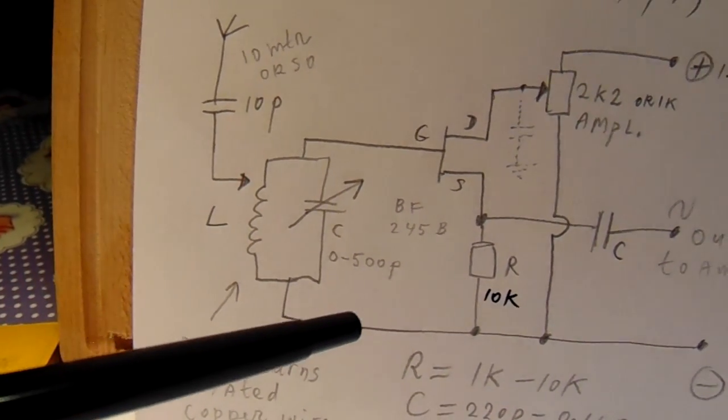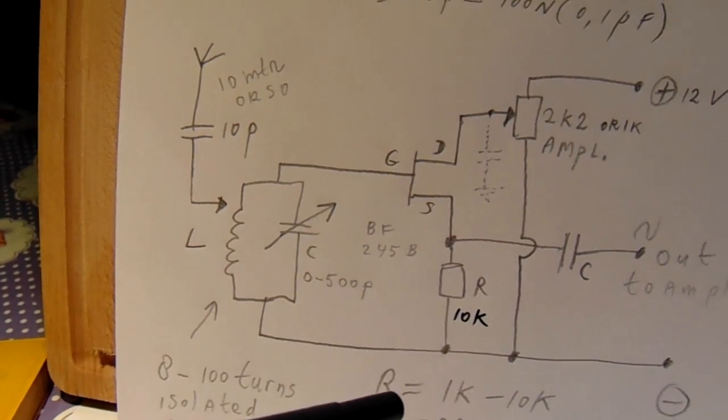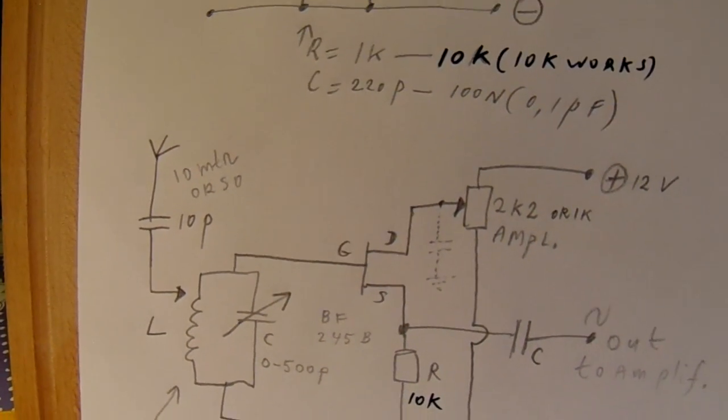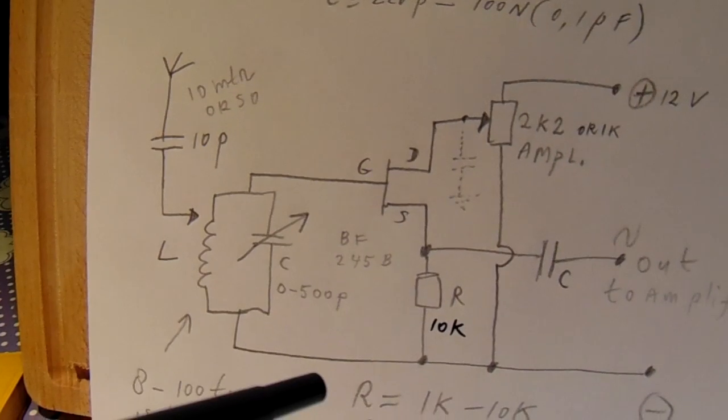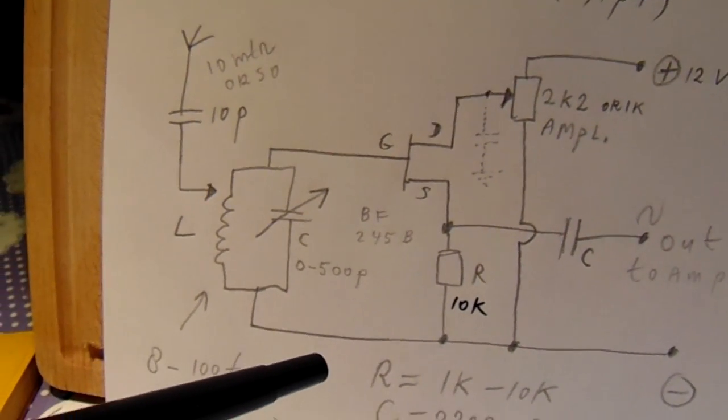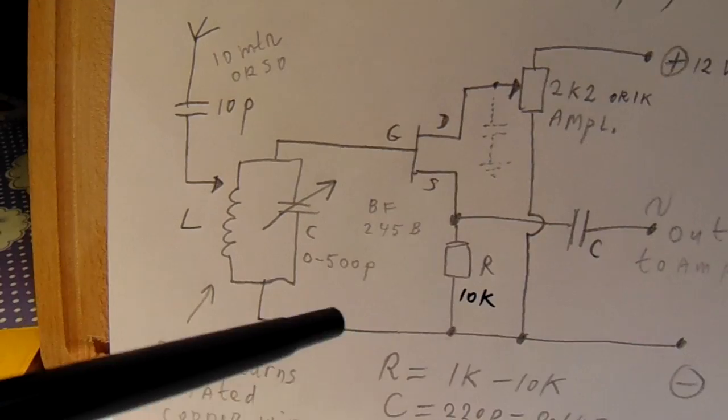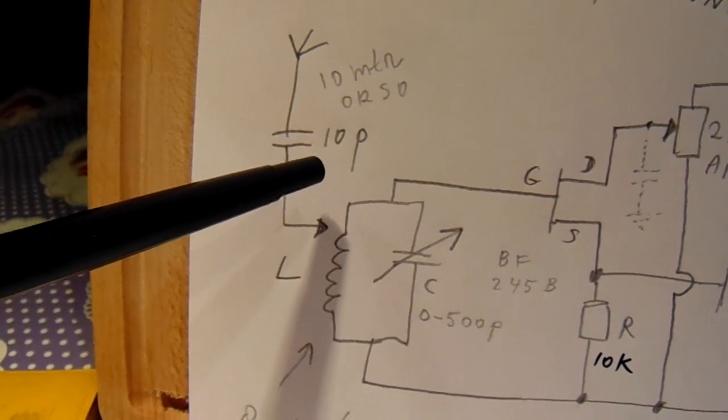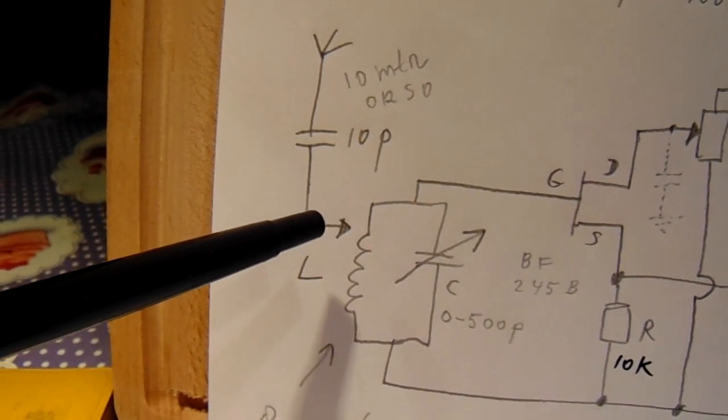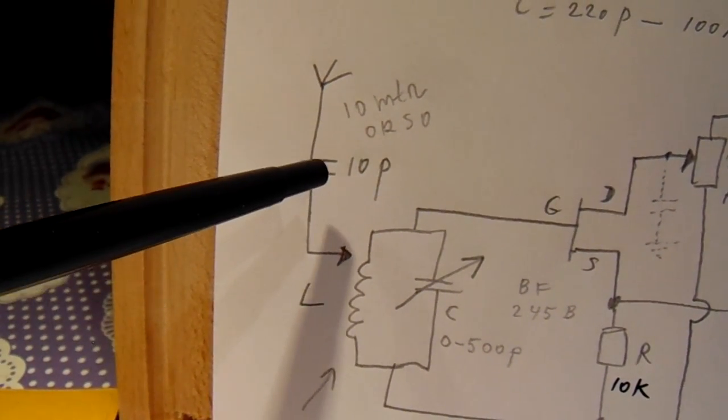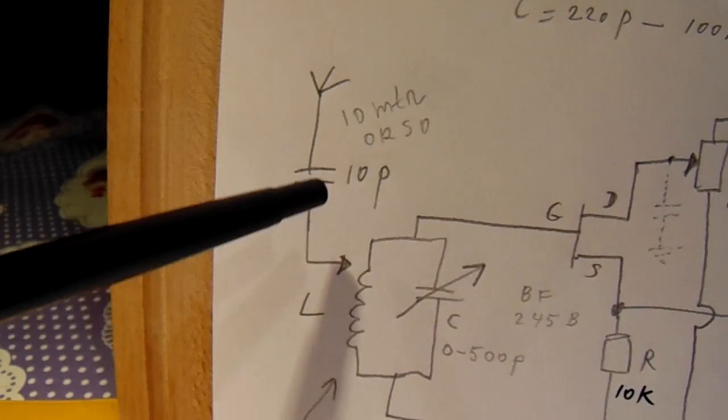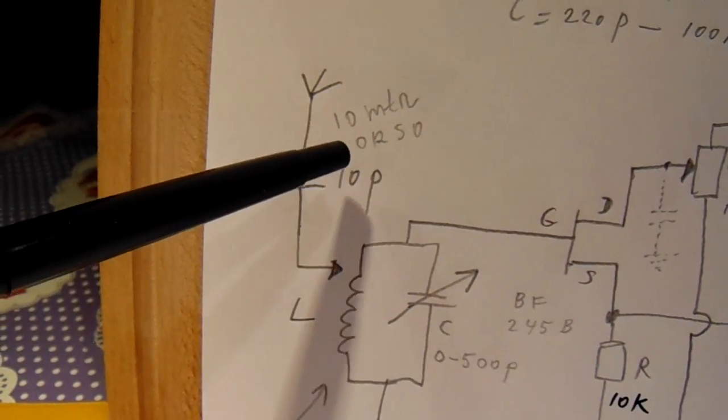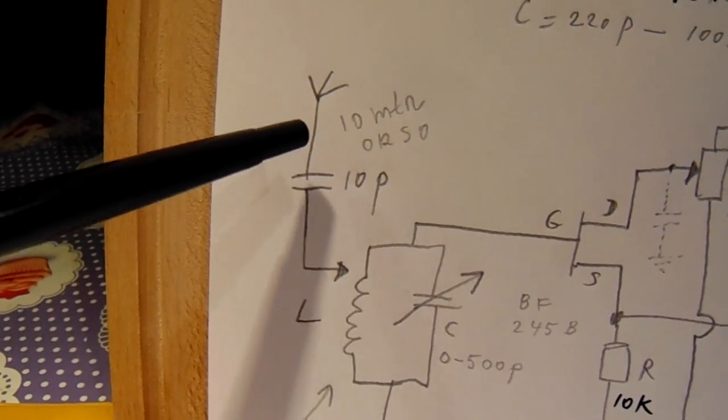When you want to use this circuit as an active antenna that is sensitive for a certain frequency band, you must here use a 10 pF capacitor in cases where you want to connect here an antenna from say 10 meters up to say 20 meters or so.